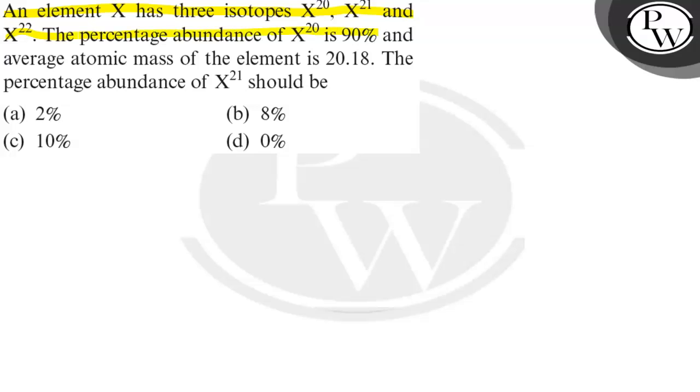The percentage abundance of X^20 is 90% and average atomic mass of the element is 20.18. The percentage abundance of X^21 should be. This is the question and there are four options. We need to select one correct option after solving.